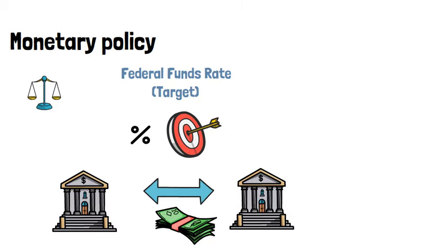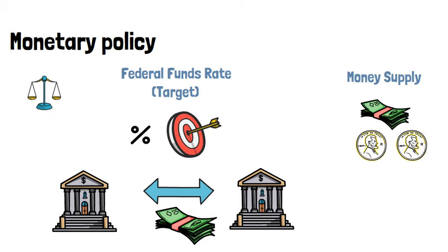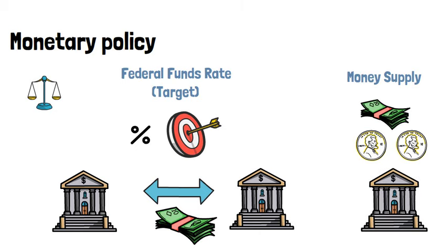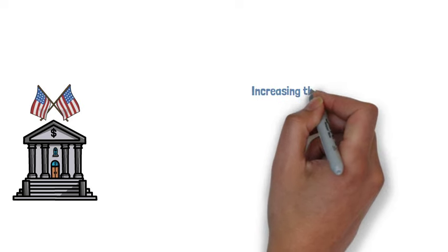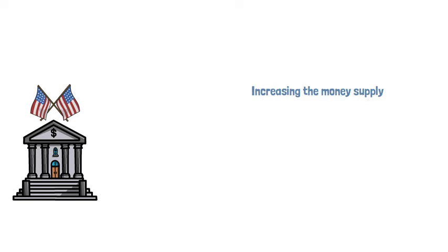The way that the central bank tries to achieve this target interest rate is by controlling the money supply. Keep in mind that notes and coins are only a small part of the money supply. Bank deposits and securities that are easily converted into cash are much larger components of the money supply today. So when we say the central bank is increasing the money supply or printing money, we usually mean that it is increasing the amount of deposits in the financial system.